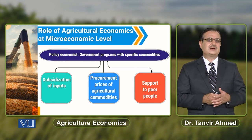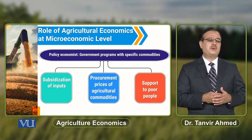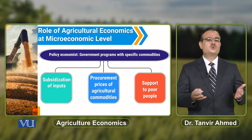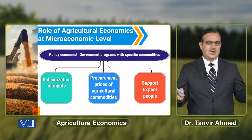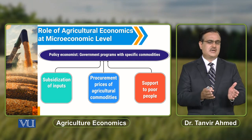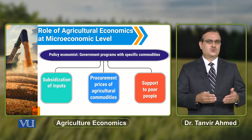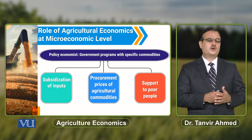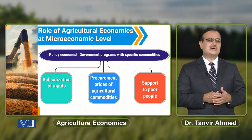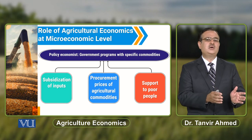To enhance and secure the income of the farmer, a procurement price may be announced for agricultural commodities. In Pakistan's setup, the government usually announces a procurement price for wheat. The objective is to secure the income of the farmer because during the harvesting season there is a lot of supply of wheat in the market, and if price determination is based on free market forces, the farmer might not be in a position to cover their expenditure on wheat production. Announcing a procurement price will help the farmer to secure his income.